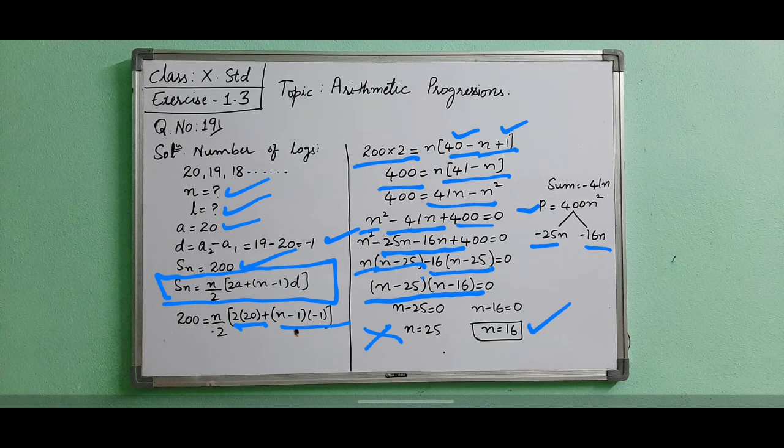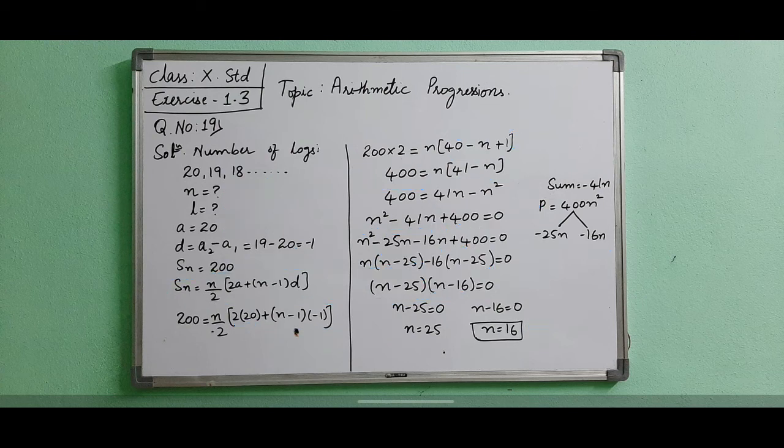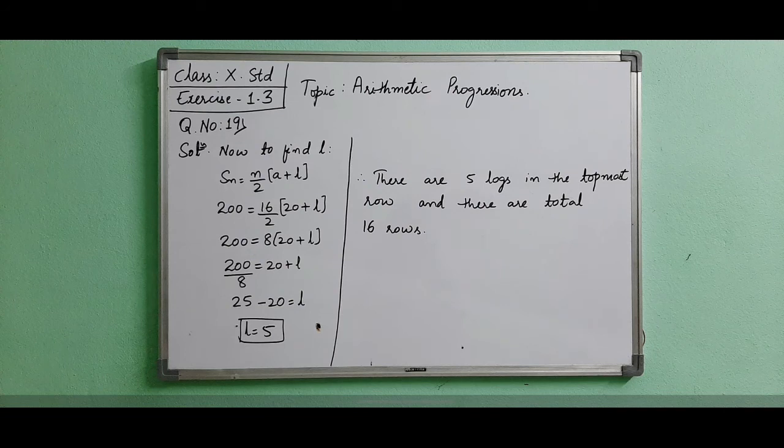So like this 16 rows are there to form the 200 logs and one more thing we have to find as the last term. Now we will find the last term.